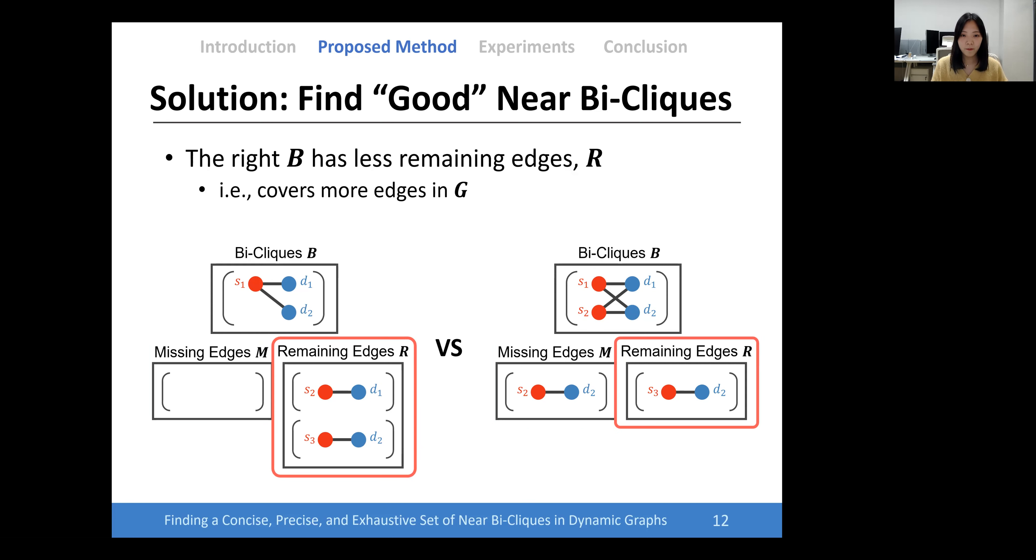However, from the same options, the right one has less remaining edges. We define the second rule, exhaustiveness, which means near bi-cliques should cover a large portion of the given graph.